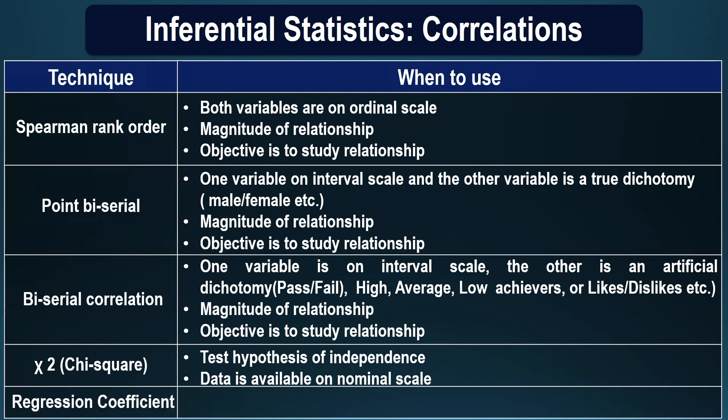Regression coefficient is used to predict a phenomenon. For example, if you have a study using the joint entrance examination and you are interested in whether performance in that examination can be used as a predictor of performance in a four-year degree program, then regression coefficients can be used. Here you have an independent variable and a criterion variable, and the criterion variable can be predicted on the basis of the independent variable.